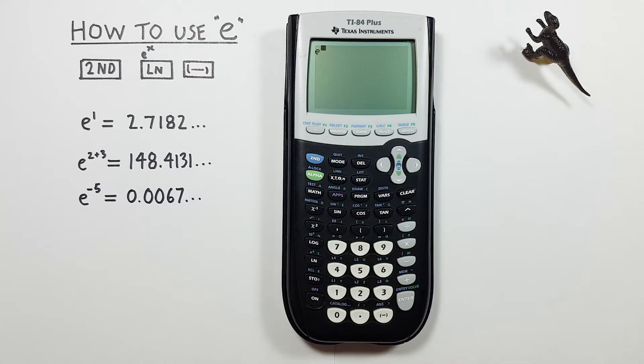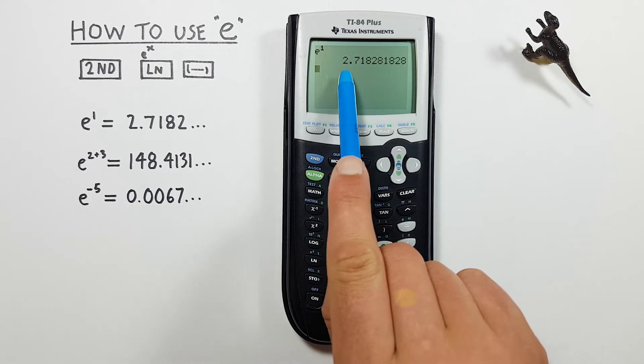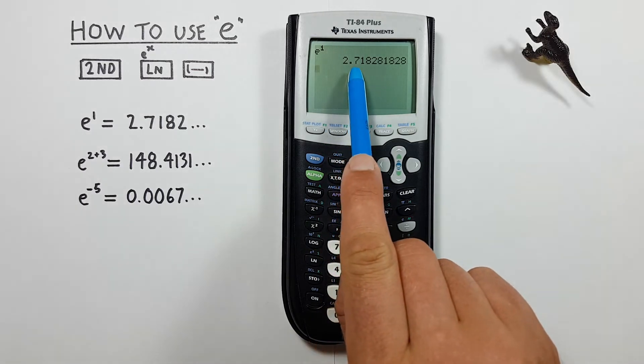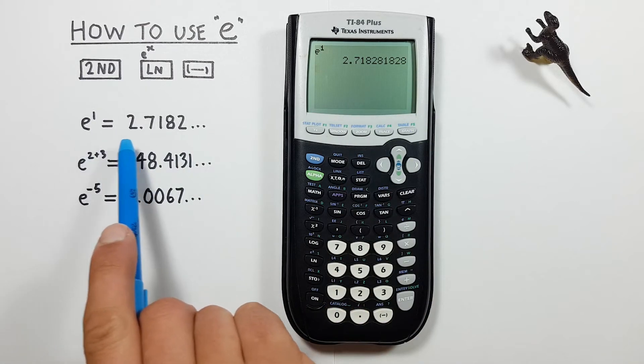We can then enter an exponent of 1 and press enter and see we get a result of 2.7182 etc, which is our e constant.